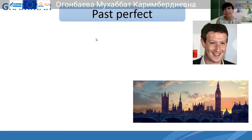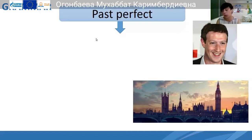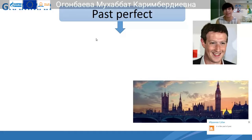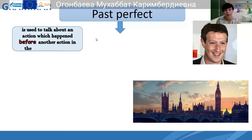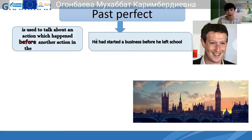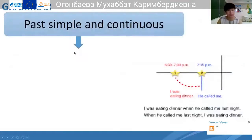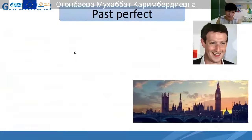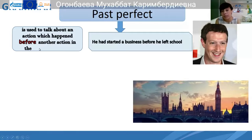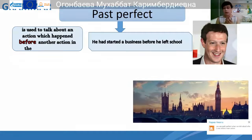Past perfect — when do we use it? We also use it in combined sentences with past simple. Past perfect is used to talk about an action which happened before another action in the past. For example: 'He had started a business before he left school.' So something happened before the past simple action. The structure is 'had' plus the past participle — 'had started.' For regular verbs we add '-ed,' and for irregular verbs we use participle two.